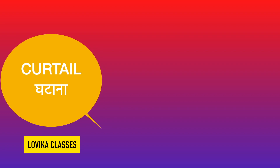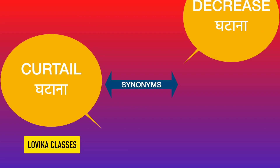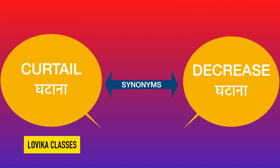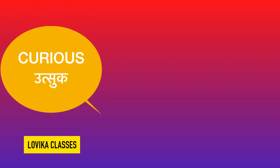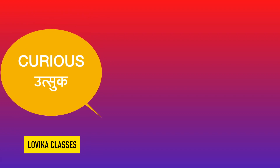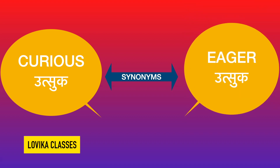Curtail means ghatana — its synonym is decrease. Curious means utzuk — kisi cheez ko jaanne ki ek chahat, usko bolte hain curious. Its synonym is eager, also meaning utzuk.